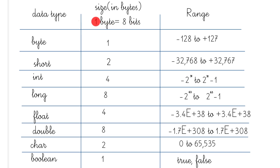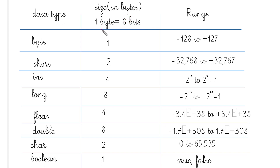Before we move further, remember that one byte is equal to eight bits. This is very important because sometimes you are asked the size in bytes, and other times in bits. We will also see how to convert bytes into bits.